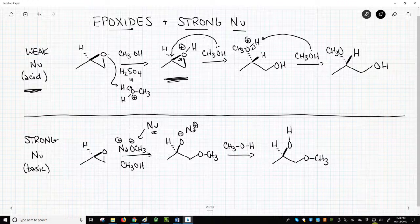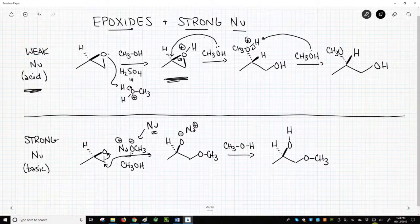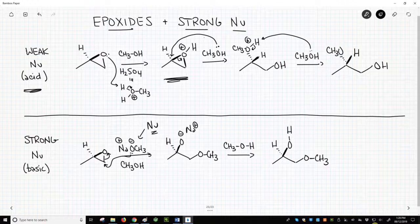It attacks, however, at the less highly substituted side of the epoxide. We then use the solvent, methanol in this case, to protonate the negatively charged oxygen.